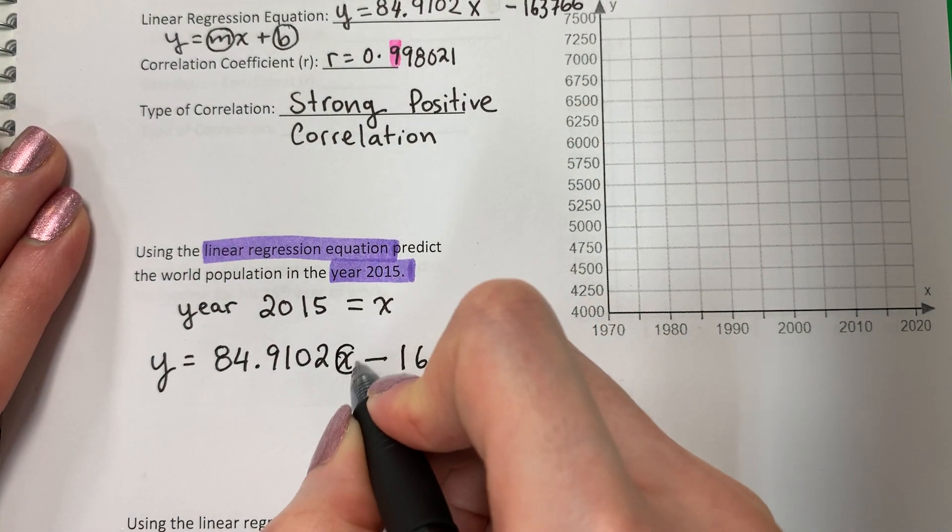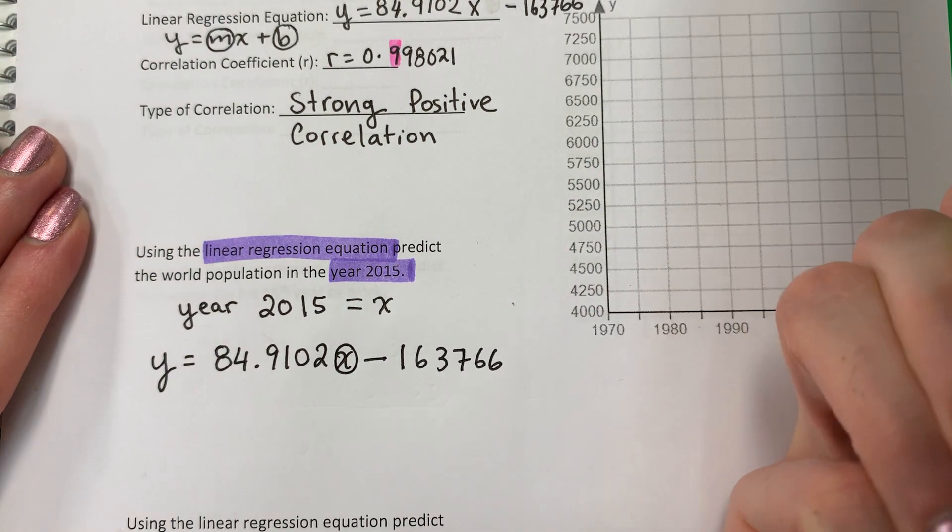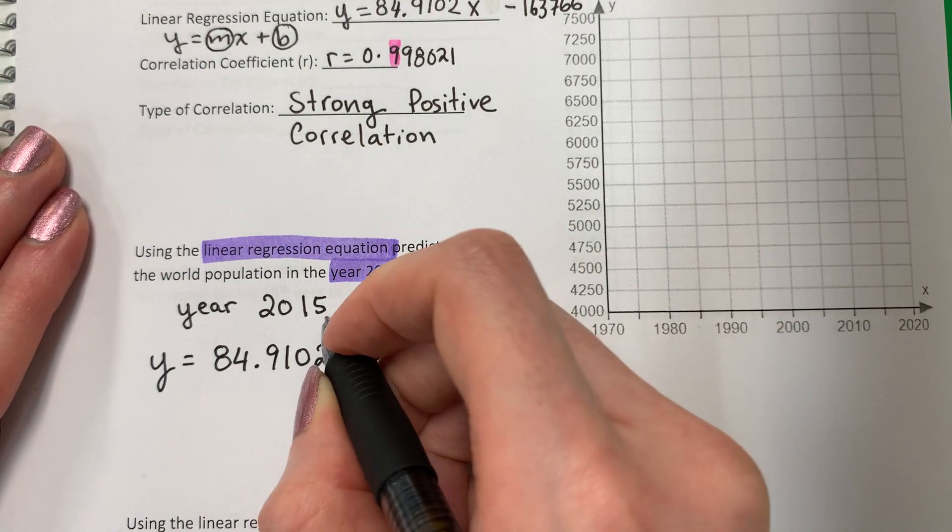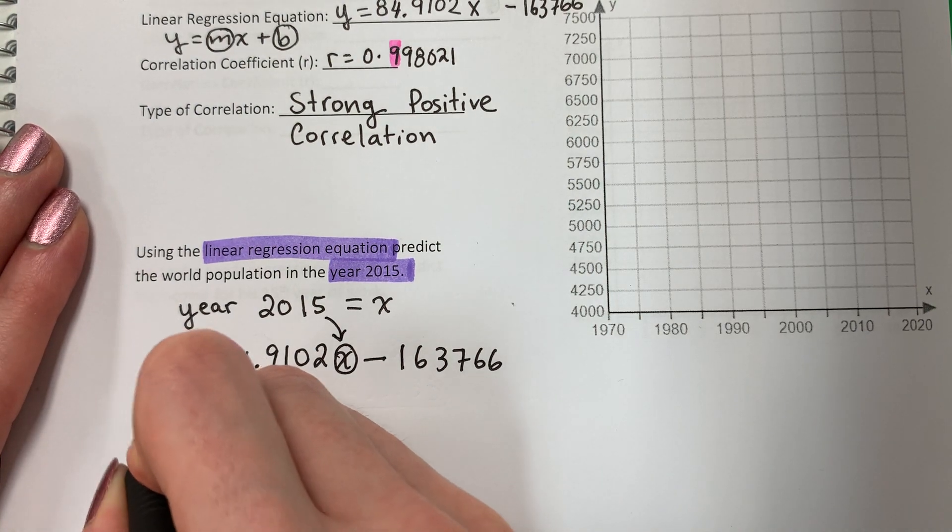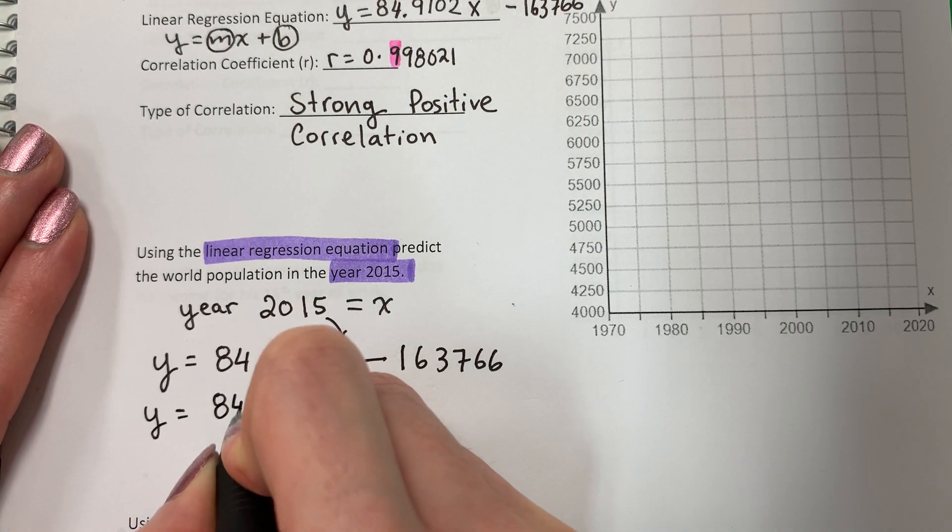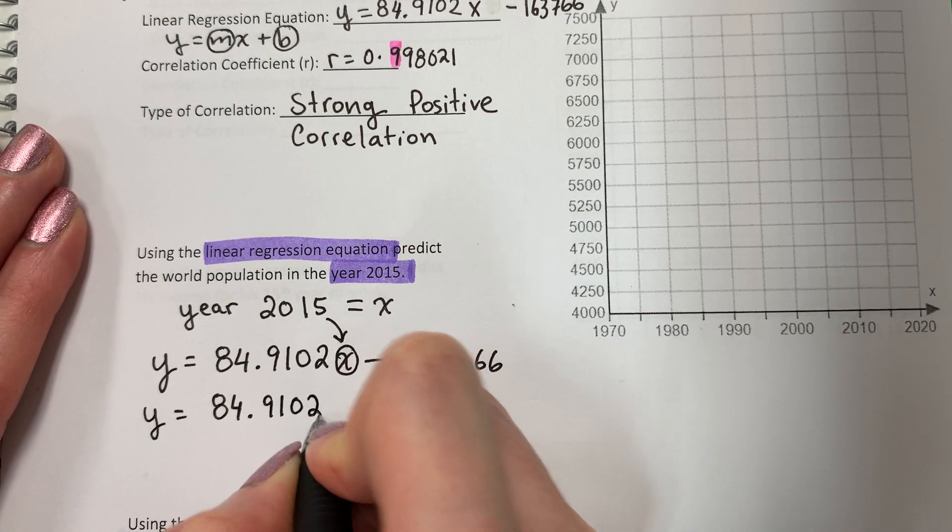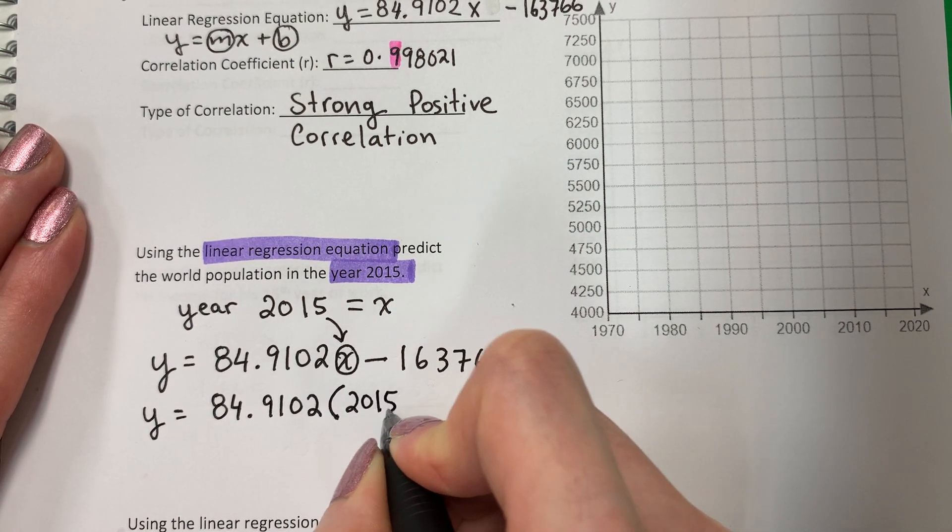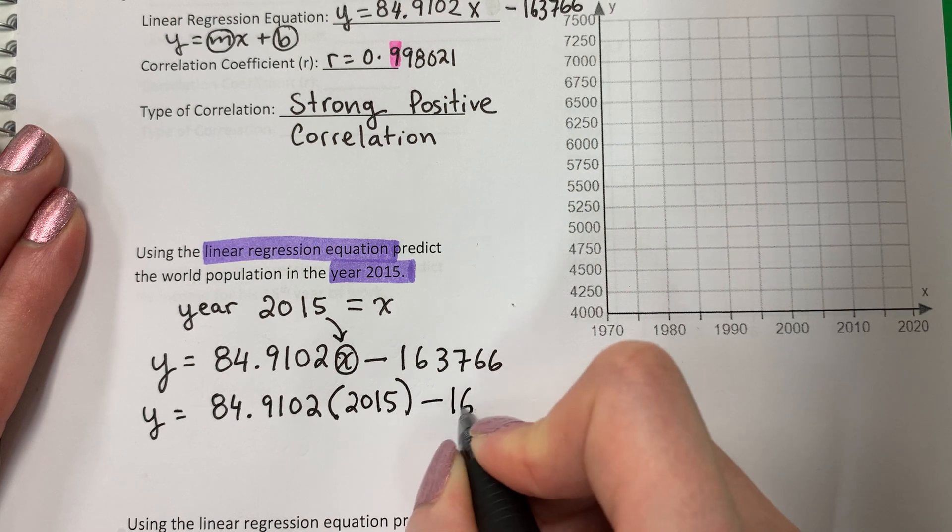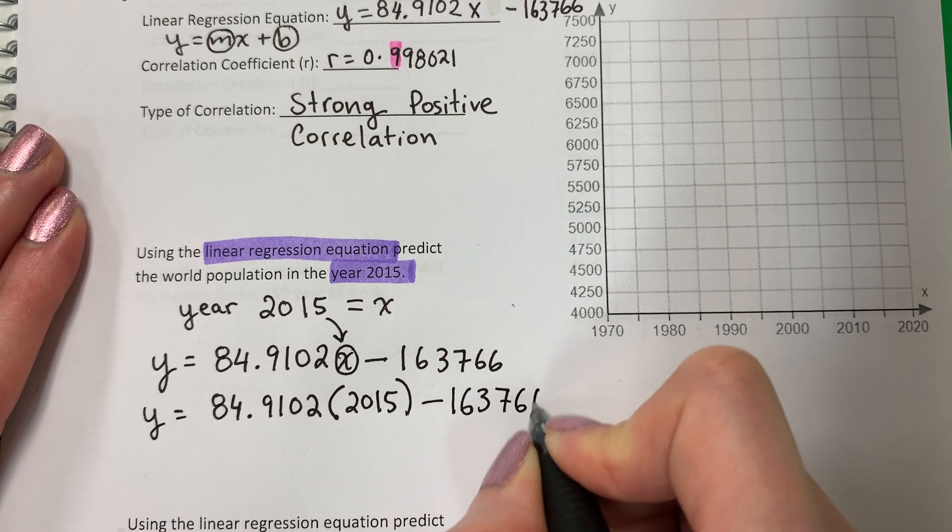I'm going to change X. Voy a cambiar X. Because I have a number for X. Porque tengo un número por X. For 2015. In parenthesis. Adentro doy parenthesis. Y equals 84.9102. Parenthesis. 2015. Copy. Minus 163,766.